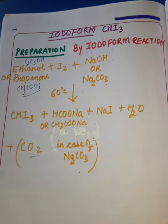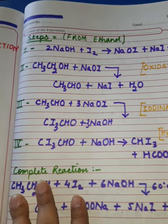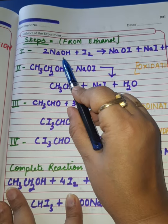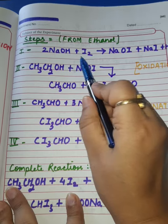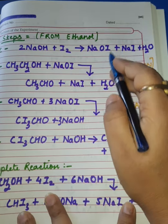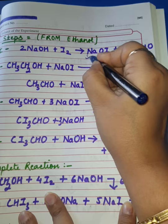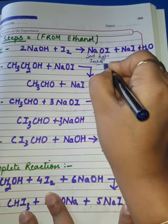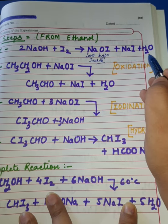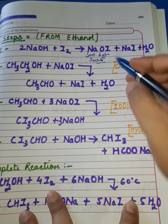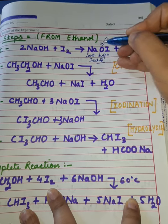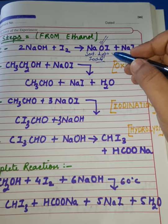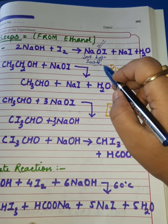The products are: Iodoform (main product), sodium salt of carboxylic acid, sodium iodide, and water. If Na2CO3 is used, CO2 is an additional product. Now let's understand this step-wise for both ethanol and propanone. Starting with ethanol: NaOH and iodine react with each other to produce sodium hypoiodite (NaOI) plus NaI plus H2O. This is the first step — formation of sodium hypoiodite.